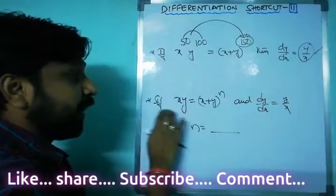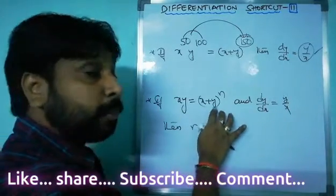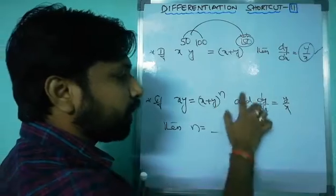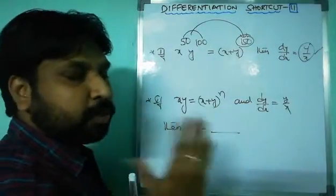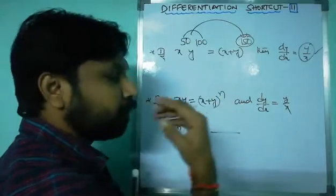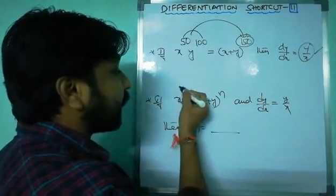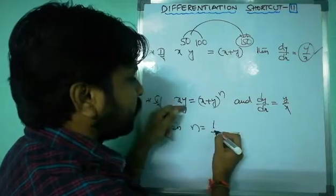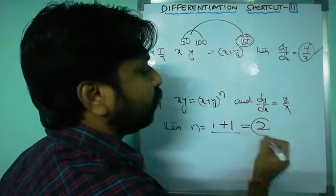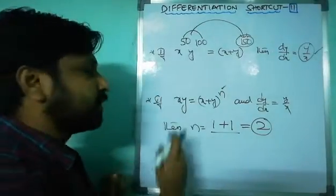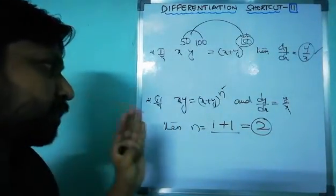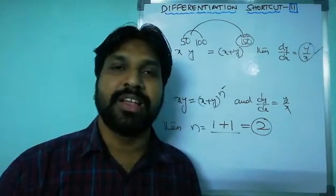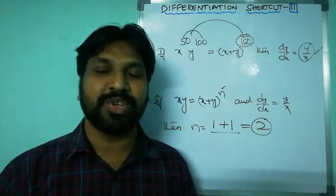The shortcut also works in reverse. If x times y equals (x+y)^n and dy/dx equals y/x, what is n? Since x^1 times y^1 follows the pattern, the exponent sum is 1 plus 1 equals 2, so n equals 2, meaning x times y equals (x+y)^2. That's all for today's class — I hope you enjoyed the shortcut. Thank you very much!